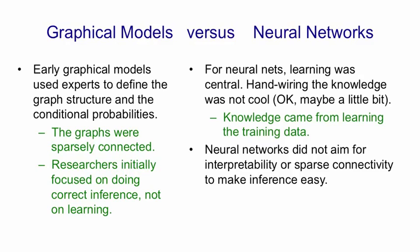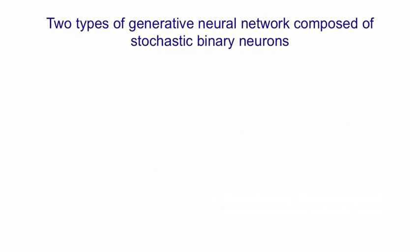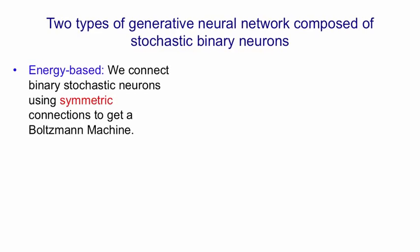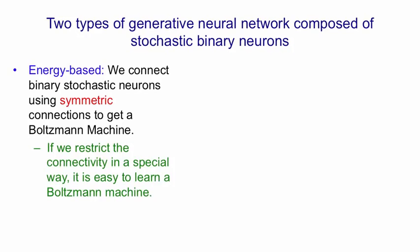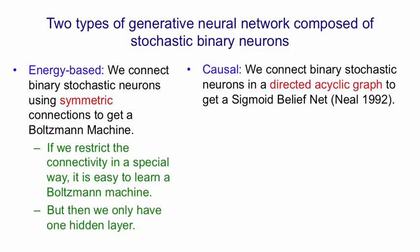Neural networks didn't aim to have interpretability or sparse connectivity to make inference easy. Nevertheless, there are neural network versions of belief nets. If we think about how to make generative models out of idealized neurons, there are basically two types. There are energy-based models, where you connect binary stochastic neurons using symmetric connections and get a Boltzmann machine. A Boltzmann machine is hard to learn, but if we restrict the connectivity, then it's easy to learn a restricted Boltzmann machine. However, when we do that, we've only learned one hidden layer, giving up on a lot of the power of neural nets with multiple hidden layers. The other kind of model is a causal model — a directed acyclic graph composed of binary stochastic neurons — and when you do that, you get a sigmoid belief net.